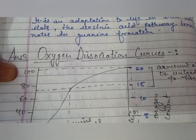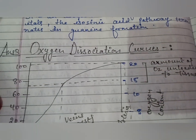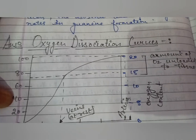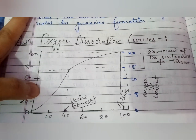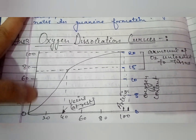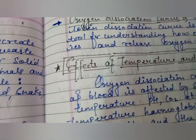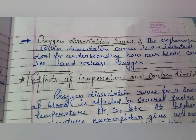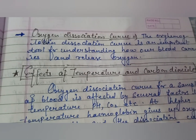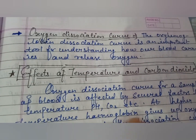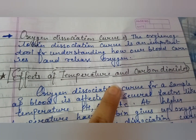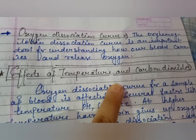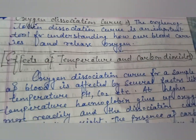The third section covers the oxygen dissociation curve — here is the curve of oxygen dissociation — including the effects of temperature and carbon dioxide on the oxygen dissociation curve.